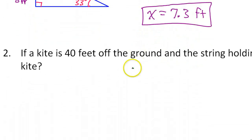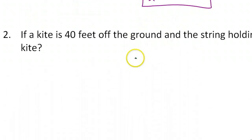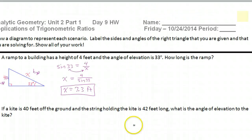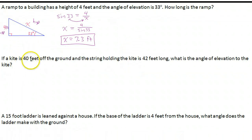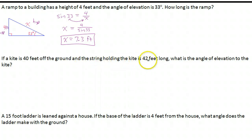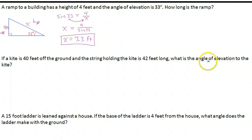Let's go ahead and take a look at number two. If a kite is 40 feet off the ground and the string holding the kite is 42 feet long, what is the angle of elevation to the kite? Let's draw that picture.